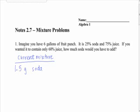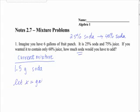We're going to have to add soda to the mixture because we want it to increase. It says we want it to contain 60% juice. Right now it's 75% juice and 25% soda. If we want it to be 60% juice, what percent of soda do we want it to be? Mia? We want it to be 40%. So let x equal gallons of soda to add.